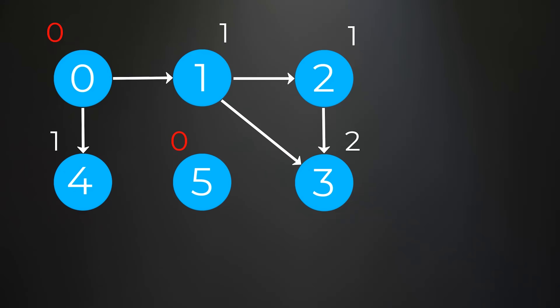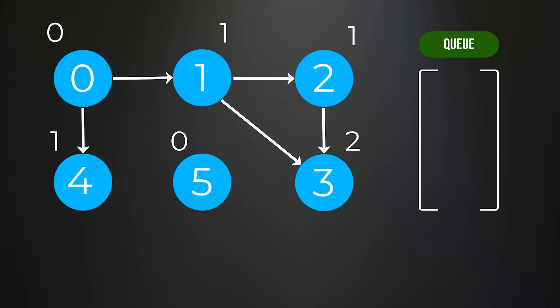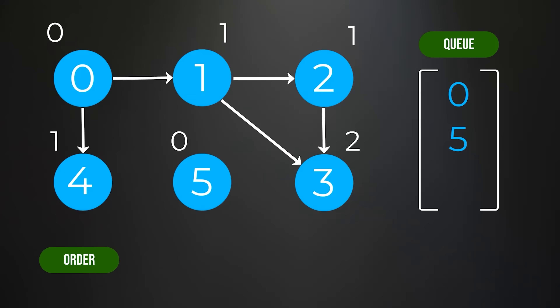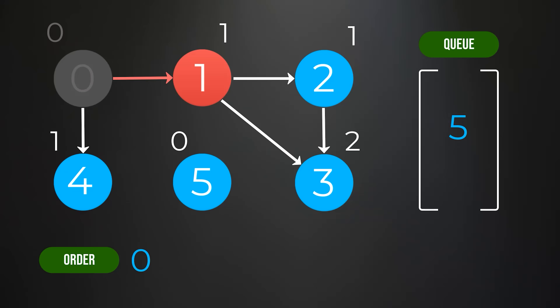Remember, if a node has an indegree of 0, that means it is not dependent on any other nodes in the graph. In order to process these nodes, we're going to use a queue data structure. Going from left to right, we process node 0 and node 5 since these nodes have indegrees of 0. When a node is removed from the queue, it can immediately be added to the topological ordering. Node 0 is removed and added to the ordering, then we see which nodes depend on node 0. Node 1 depends on node 0, so we decrease its indegree count to 0, and add node 1 to the queue.